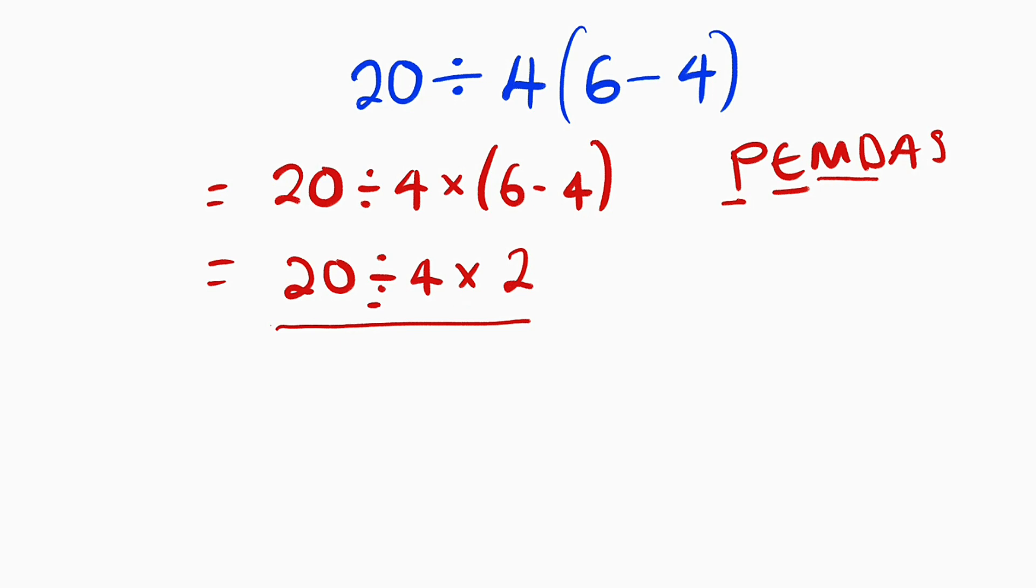So we do 20 divided by 4 first. 20 divided by 4 is equal to 5, then we have multiplication. We carry out the multiplication, 5 multiplied by 2 is 10.